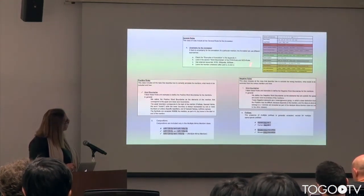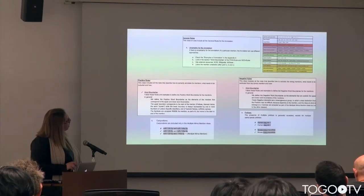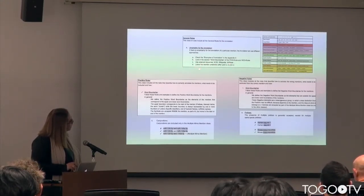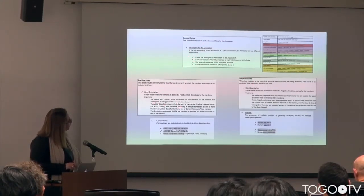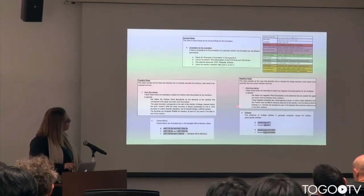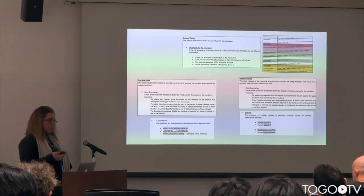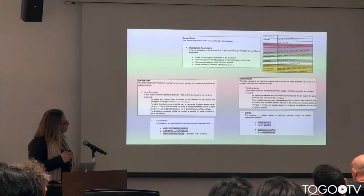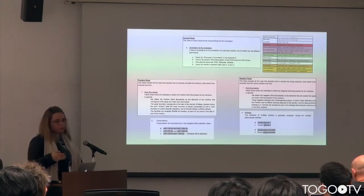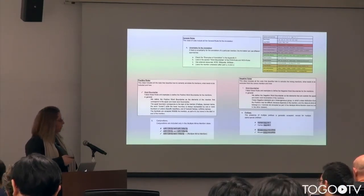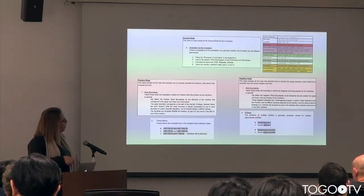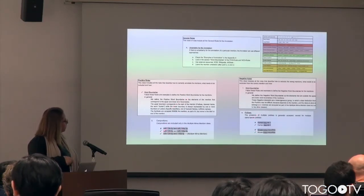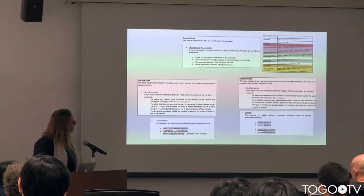These are the rules — general rules on how to perform the annotation. Every type of rule is divided into points, so it's very easy to access the information. Positive and negative rules define what to and not to include in the labeling. All of them have examples with a checkmark for the correct way and a crossmark for the wrong way to label the mention.